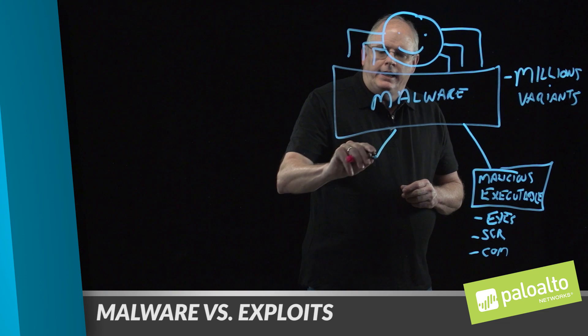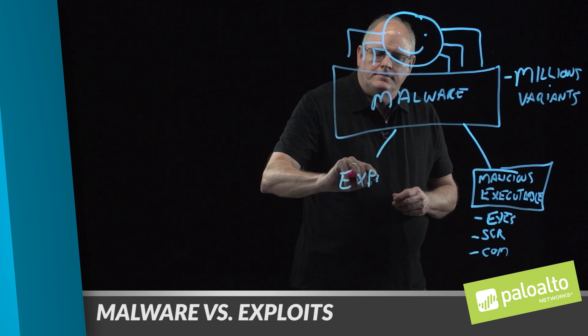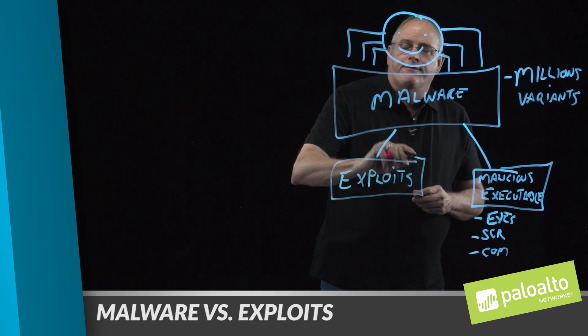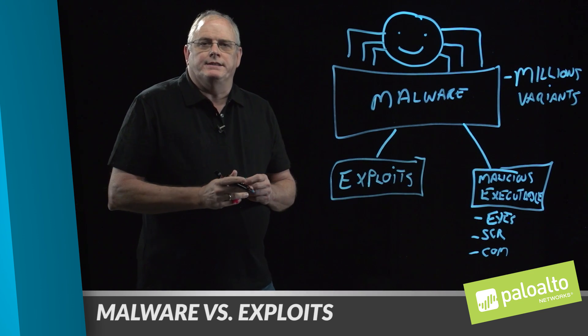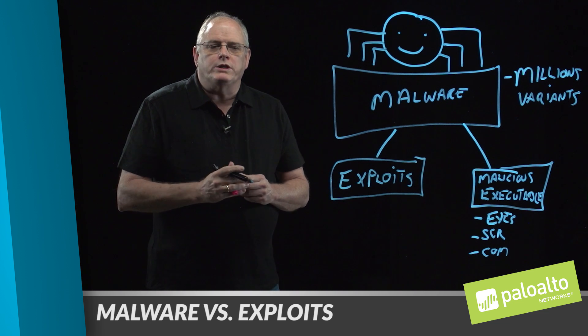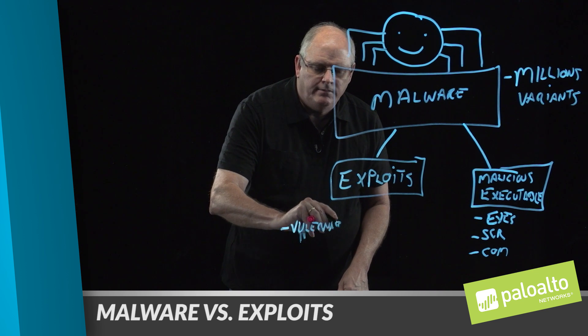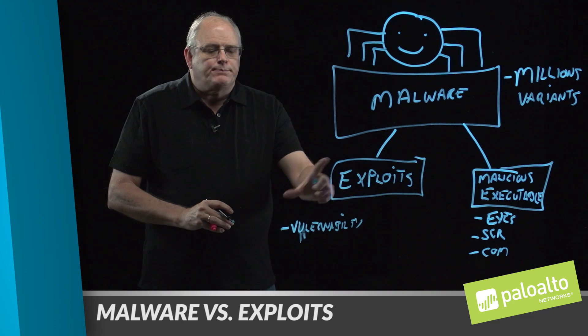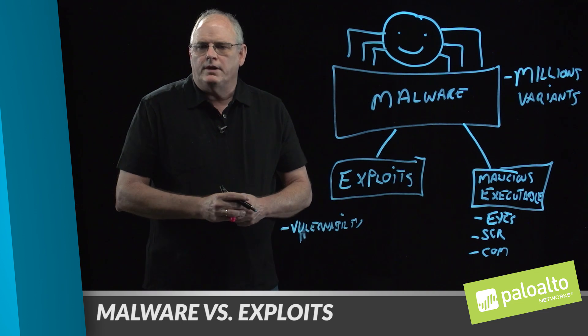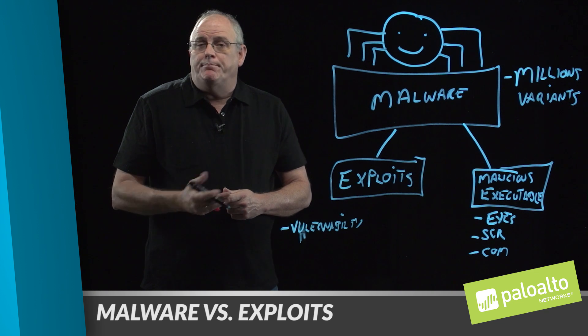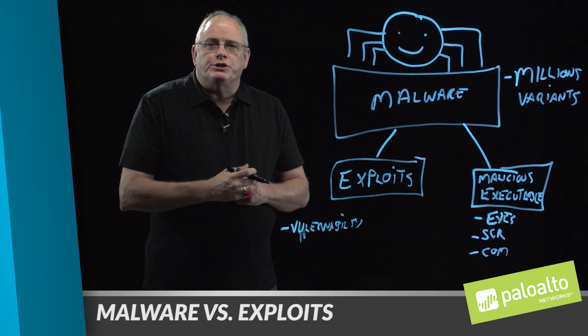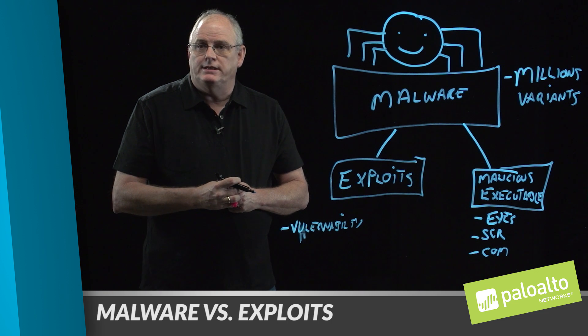The other area of malware is known as exploits. Exploits are a little bit different — they have a dependency, which is based upon what's known as a software vulnerability. For an exploit to be successful, we have to have a vulnerability first. An exploit takes advantage of a vulnerability. A vulnerability is basically a bug in software code where you're allowed to do something that the initial software developer did not intend the machine to do.